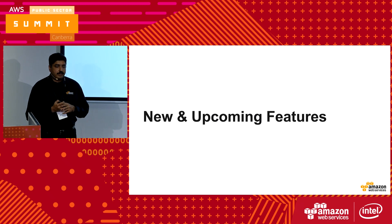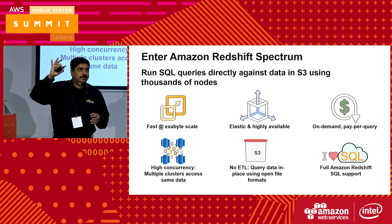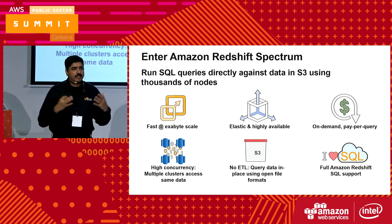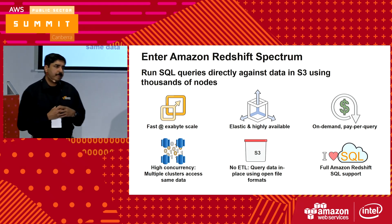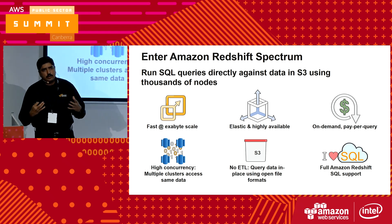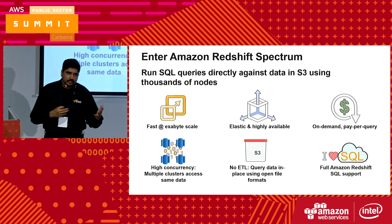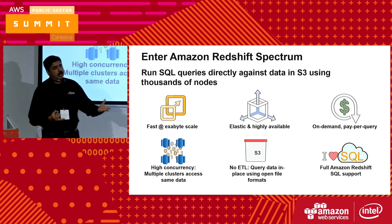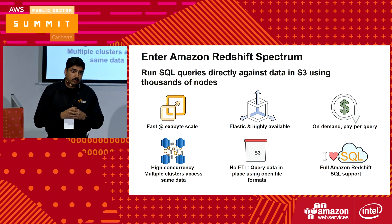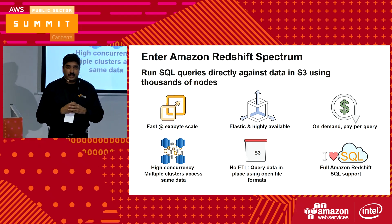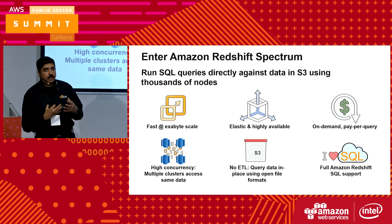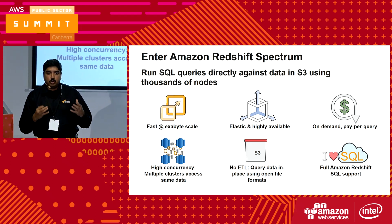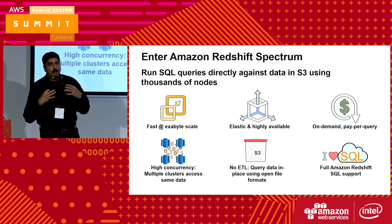A few new and upcoming features. Redshift Spectrum — S3 is your data lake; you put all your data in S3 and query it using your Redshift cluster, Athena, or EMR. Spectrum allows you to query data stored in S3 without having to load it into the Redshift cluster. It is fully SQL-compliant and pushes SQL predicates into the Spectrum layer so your cluster isn't overburdened — it doesn't pull a terabyte of data in; it pushes predicates down and returns only what's needed.